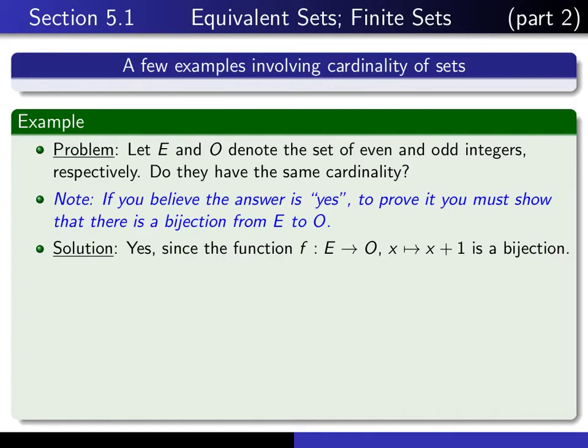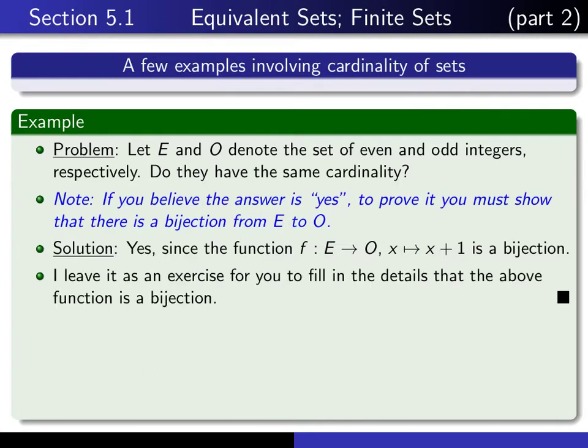And here's the solution. The answer is yes, they have the same cardinality, and that's because I can define the function f from the set of even integers into the set of odd integers by just simply mapping x to x plus 1. Okay, and then it's just simply a matter of writing rigorous proof that that is a bijection. I'm going to leave that as an exercise for you to do, to show that it's a bijection.